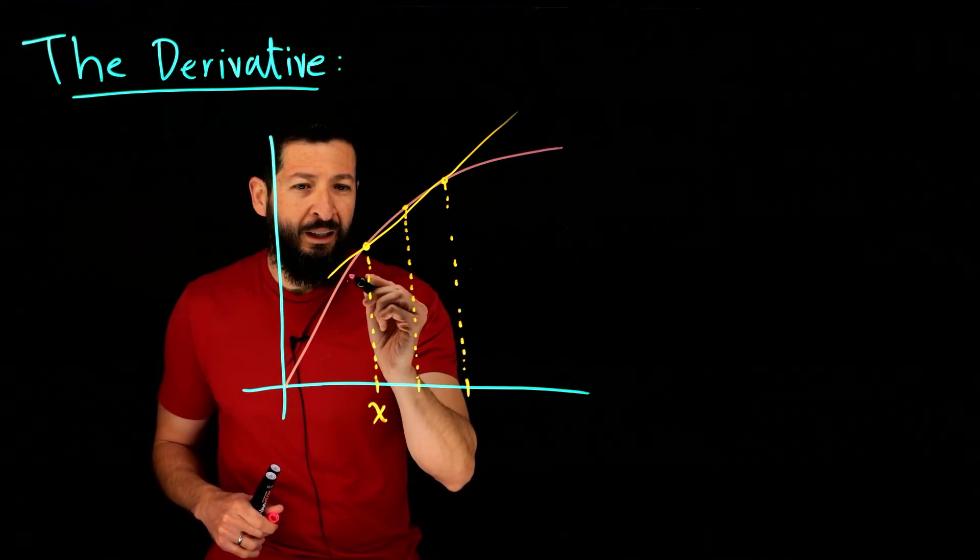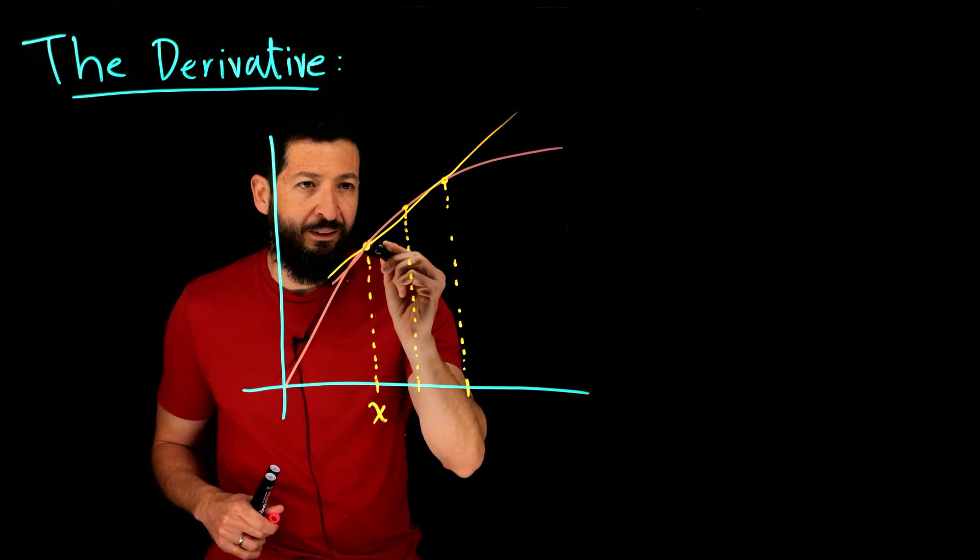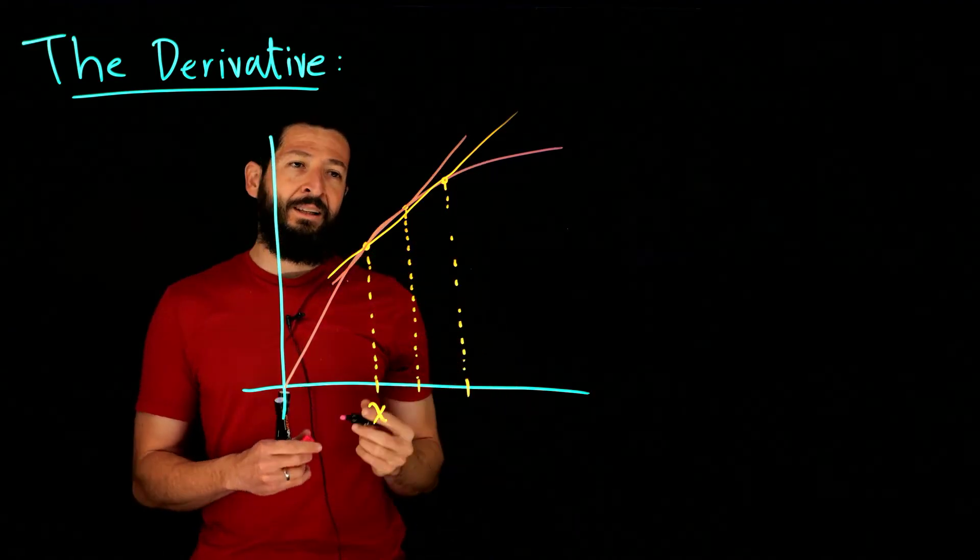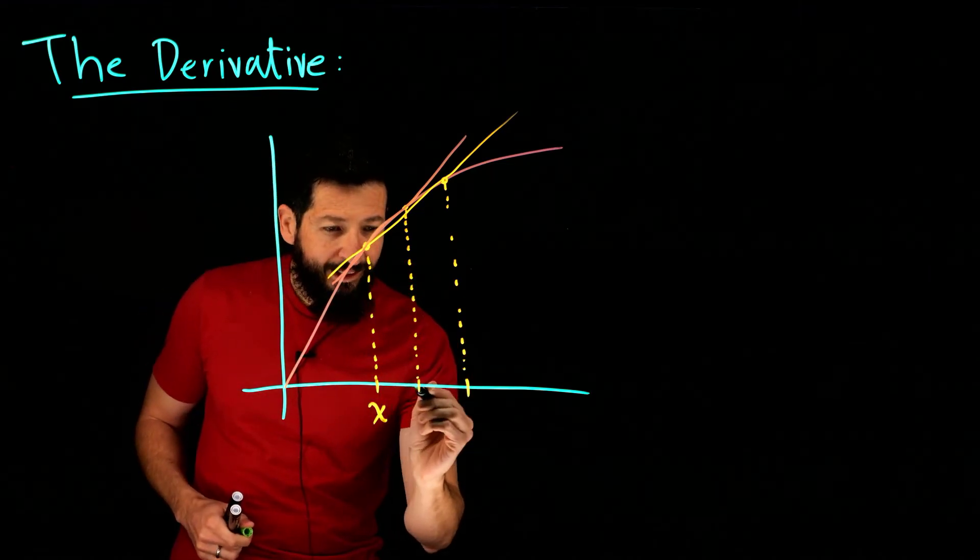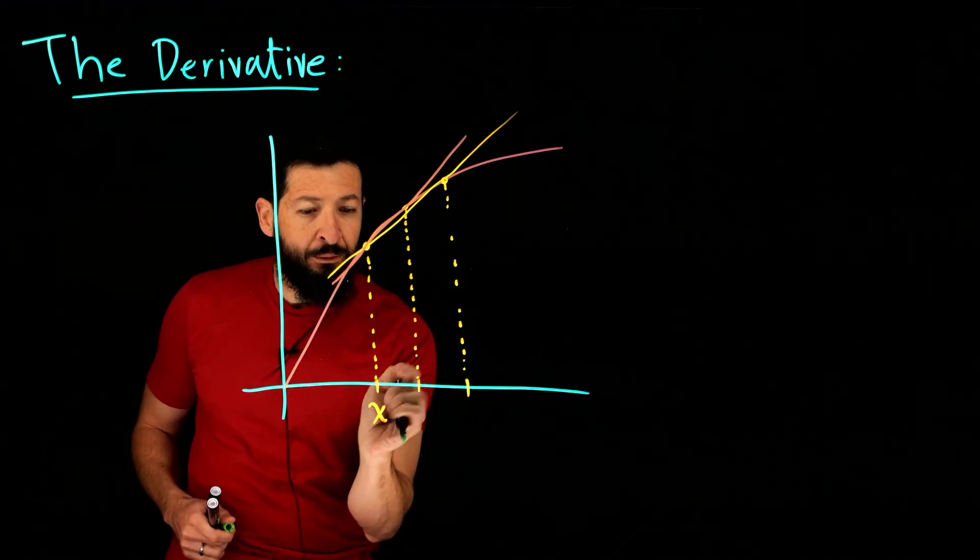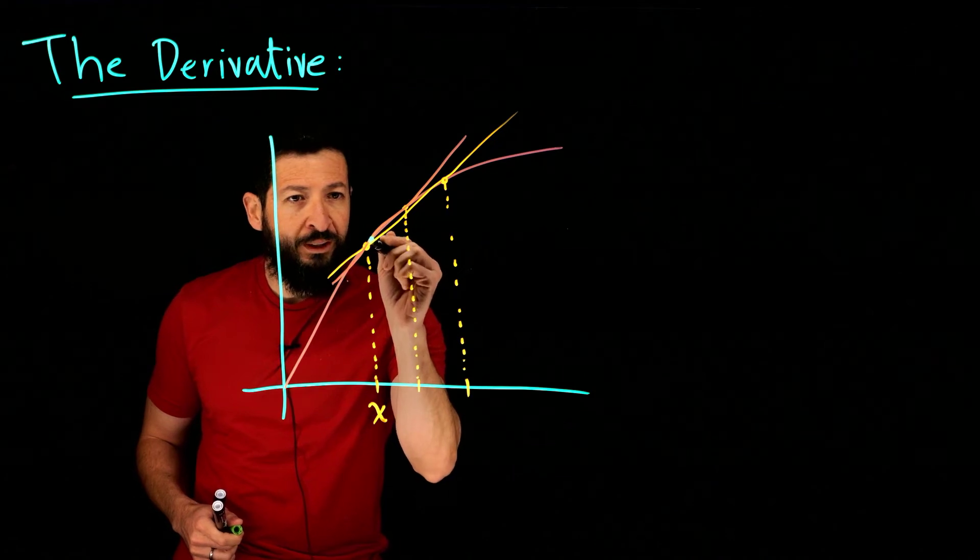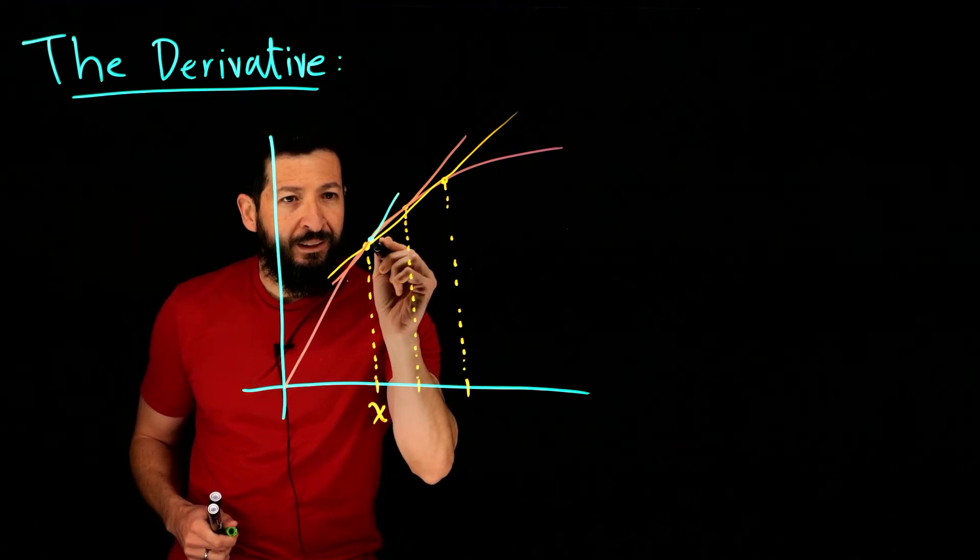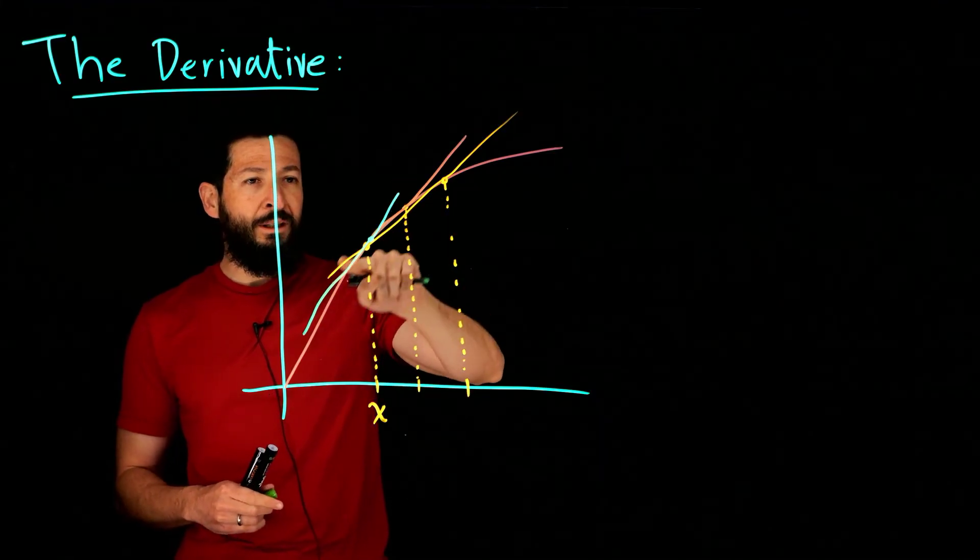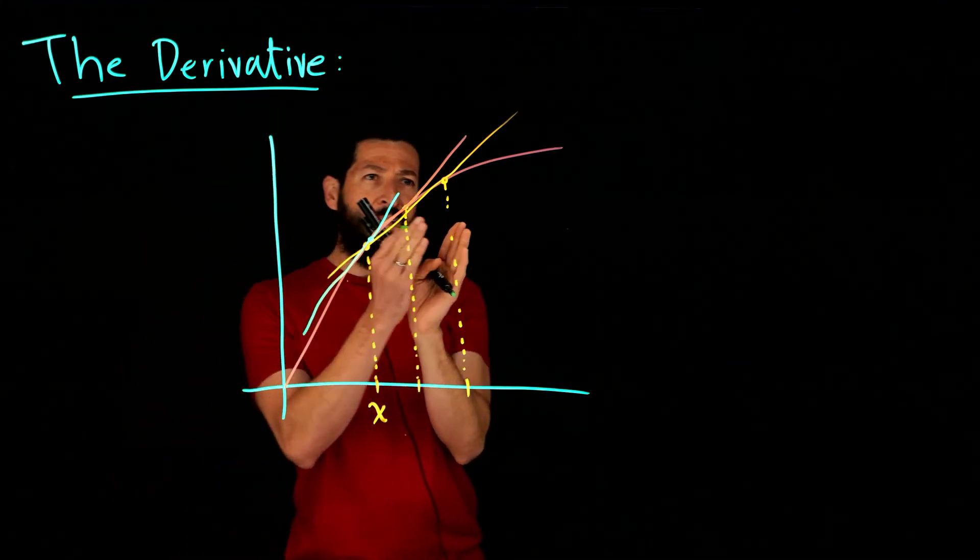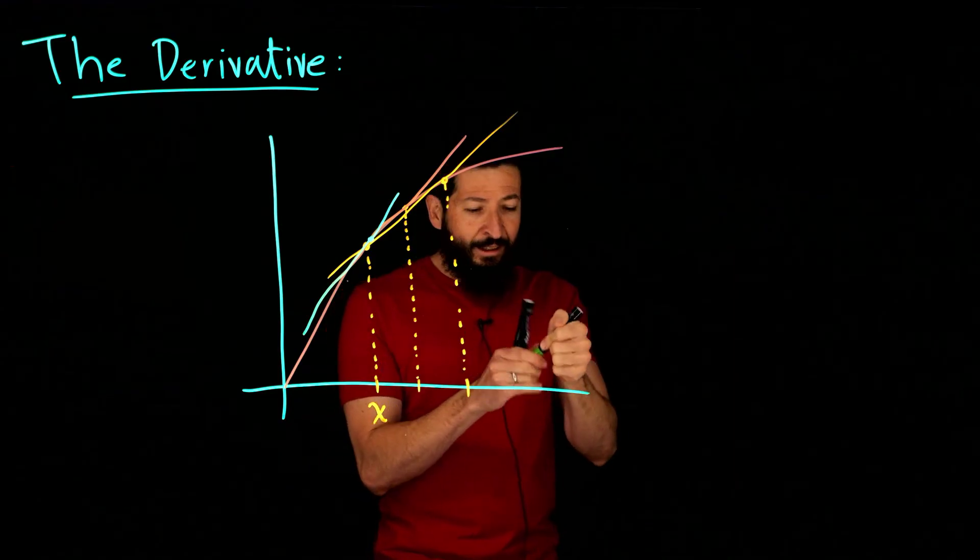But now the main one is what if you make this h really really small, so you go up to here. Then you see this line is starting to get really really close to the graph but just touching it ever so slightly. What is going to happen when we let that h go down to zero?